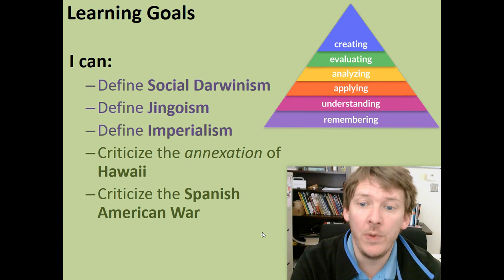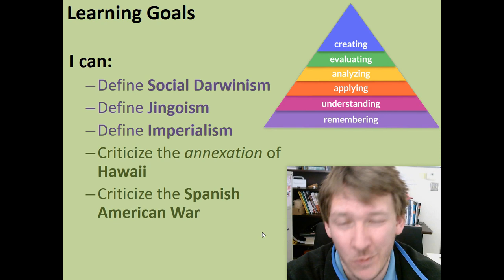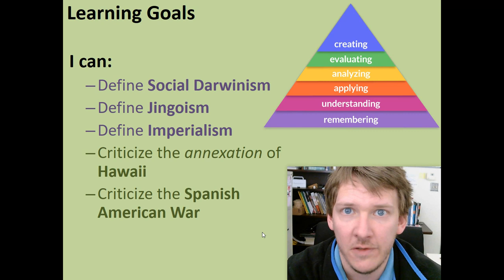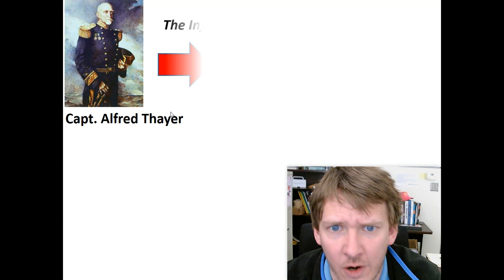Social Darwinism, got that. Jingoism, got it. Imperialism will be what we mainly talk about, giving you specific examples of imperialism. If you don't remember, that's when a stronger nation — which will be America — takes over a bunch of other, weaker nations for our own gain. The annexation of Hawaii and the criticism of the Spanish-American War. Let's roll.